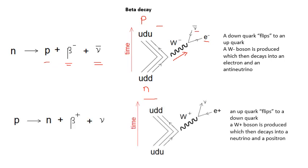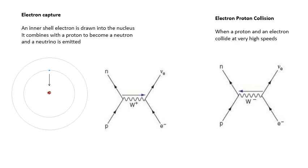This is a proton decaying. We start with a proton and end up with a neutron. This time a W plus boson is involved, and we get a neutrino and an anti-electron, which is a positron. There are some interesting uses of arrows in these diagrams — anti-leptons are shown going backwards in time, but you don't need to know that. These diagrams are called Feynman diagrams, invented by American physicist Richard Feynman to help explain what's going on in these interactions.